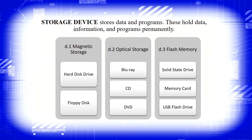Storage devices are devices which store data and programs, holding data, information, and programs permanently. We have three types: magnetic storage (hard disk drives or floppy disks), optical storage (Blu-ray, CD, and DVD), and flash memory (solid state drive, memory card, and USB flash drive).